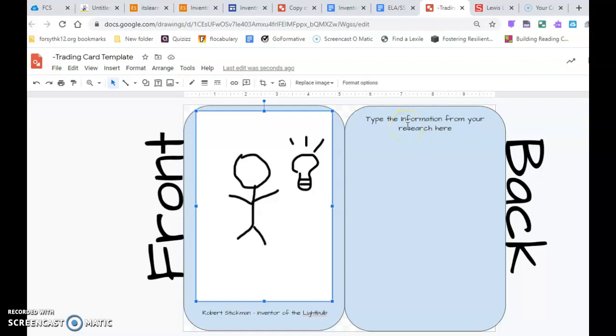So depending on what program you use on the internet, it'd be similar to this. And then I would fit it in and then put Robert Stickman, inventor of the light bulb. I just type that in, and then here I'm typing my research. Once again, complete sentences. For this, if you want to draw a picture, sketch it out, color it, and then just snap that picture, save it to your computer, and then insert it in here. You guys should know how to do that.